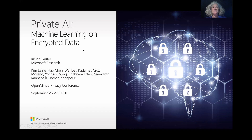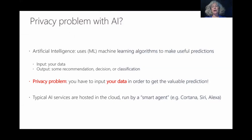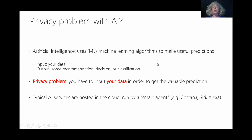The title of my talk, Private AI: Machine Learning on Encrypted Data, is intended to address the following problem. The privacy problem with AI is that artificial intelligence or machine learning algorithms use a lot of data to make useful predictions. They input your data and then output some kind of recommendation, image classification, or decision. The privacy problem is that you have to share your data in order to get the prediction.